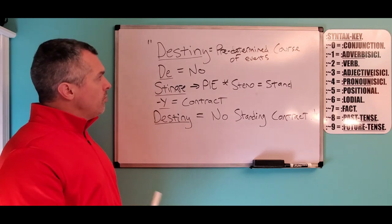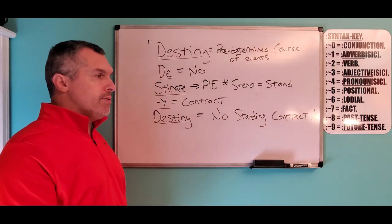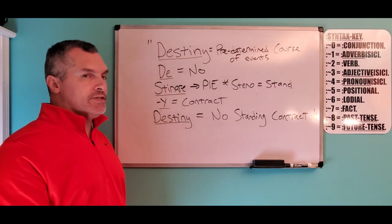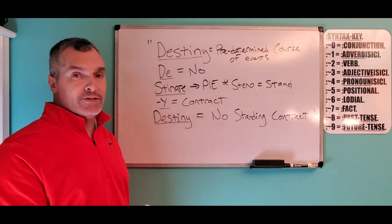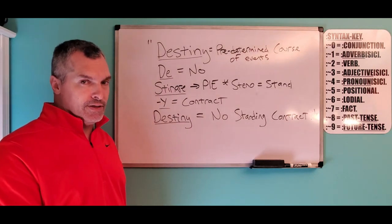destiny is a predetermined course of events, meaning your destiny has already been chosen for you, as if it's a plan or someone else's plan, it's already been planned out, you don't have any choice in the matter.